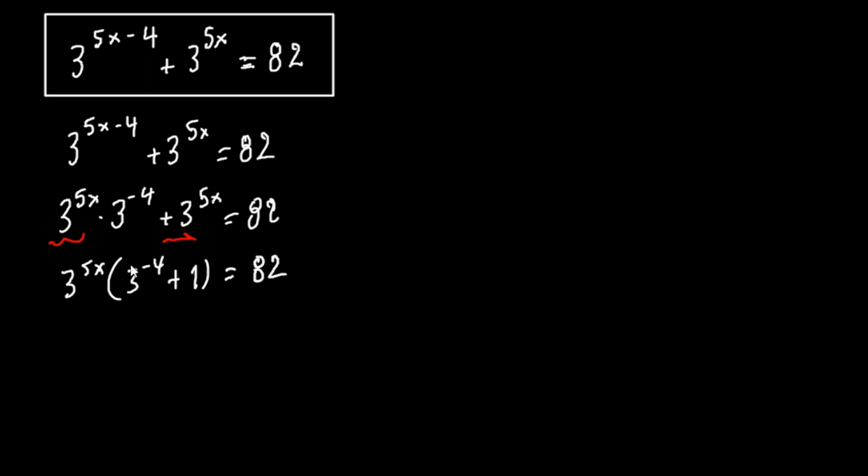Now here we know that 3 to the minus 4 equals to the fraction of 1 over 81. So we have 3 to the 5x times 1 over 81 plus 1 equals to 82.